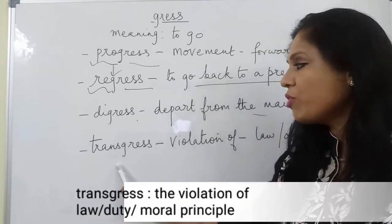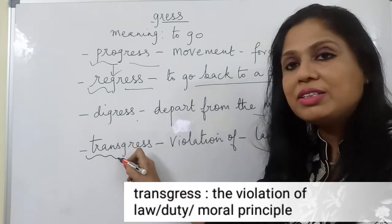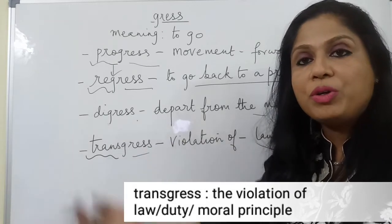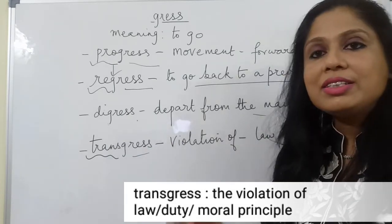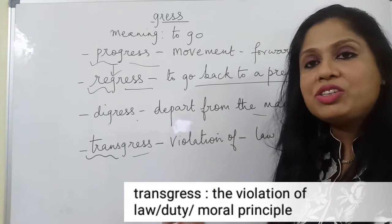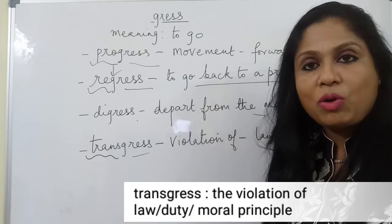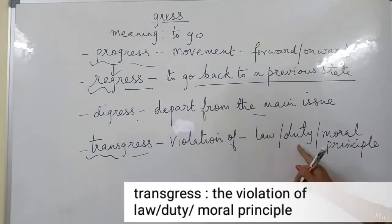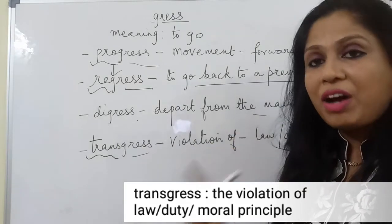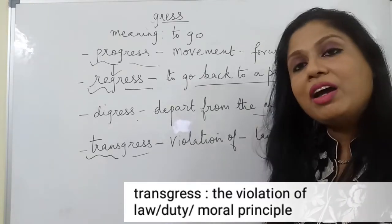The next word is 'transgress'. It also contains two root words. 'Trans' means beyond, so to go beyond or to move beyond is to transgress — a violation of something. It could be a violation of different types of things. Suppose I violate or break the law, I have transgressed. I could violate my duties, or violate religious or moral principles — in all these cases, I have transgressed.